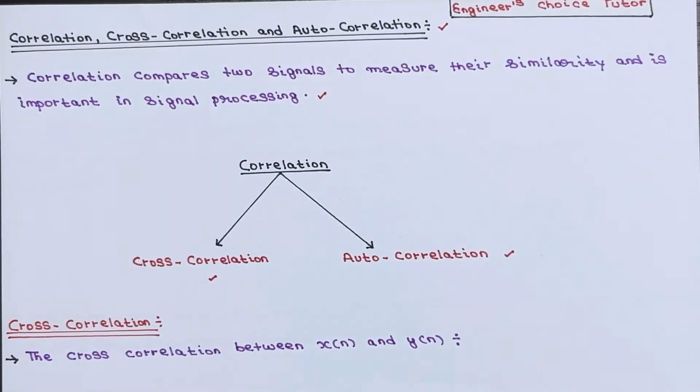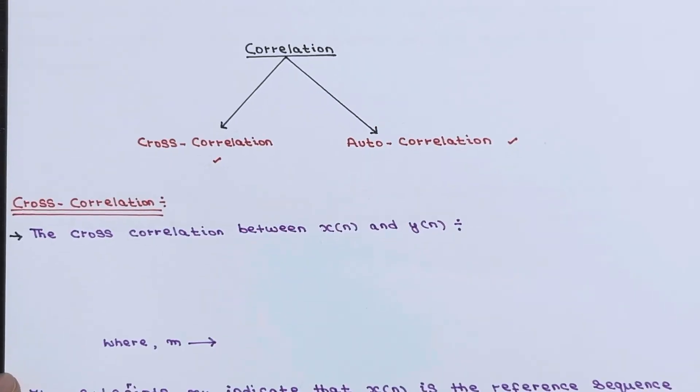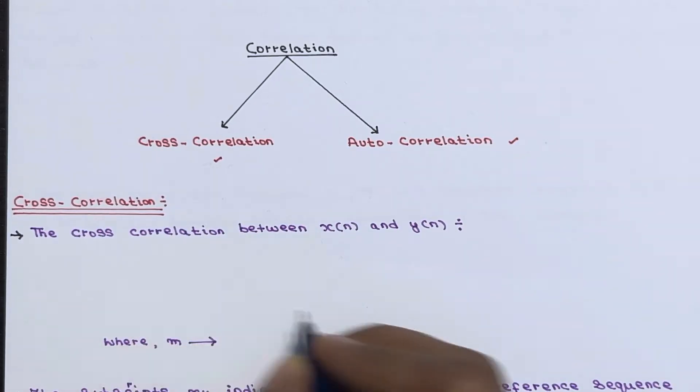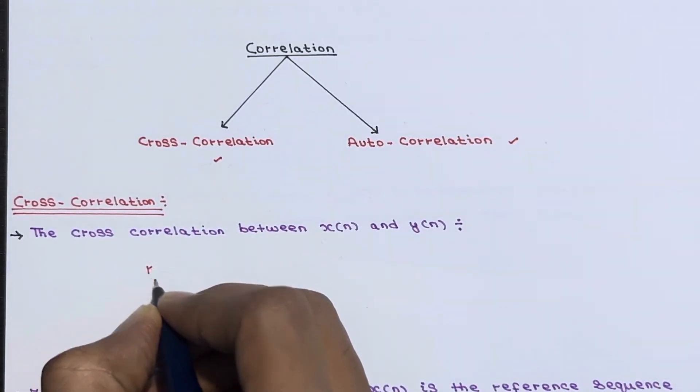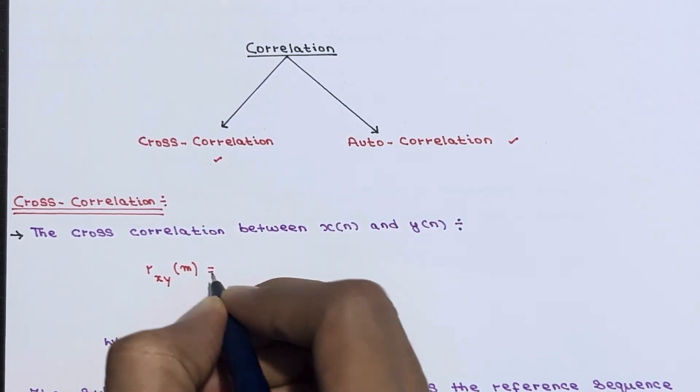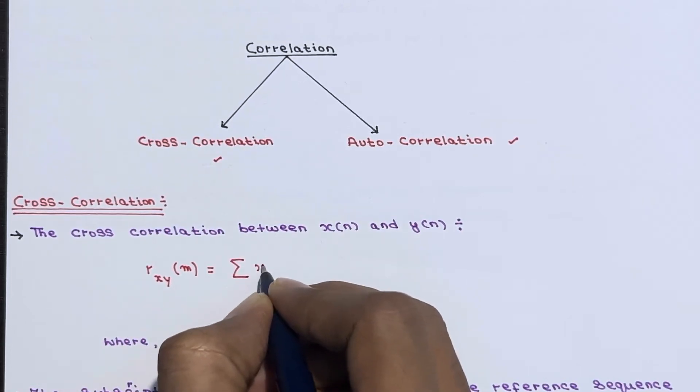So let's understand first what is cross-correlation. The cross-correlation between x of n and y of n is given by r subscript xy, this is a function of m which is nothing but equal to summation of x of n